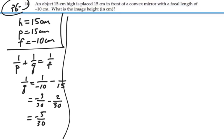So that means that 30 is going to equal negative 5q. q will equal 30 divided by negative 5, or negative 6 centimeters.